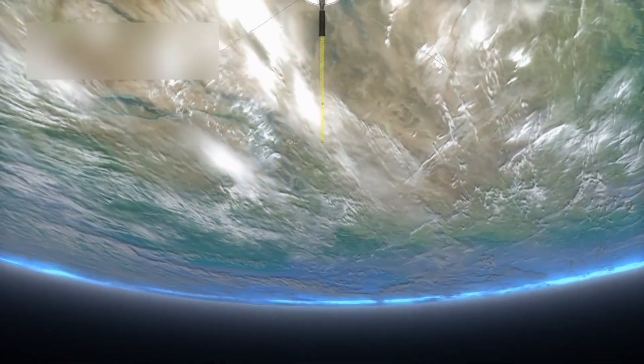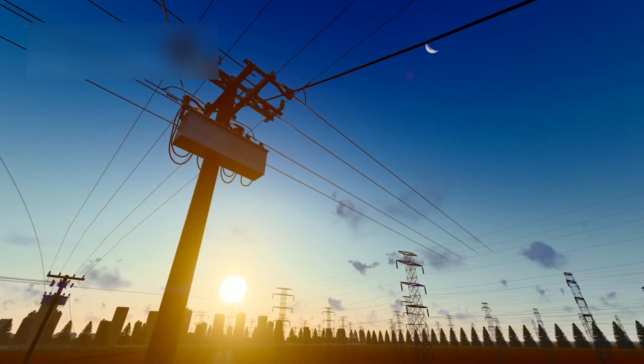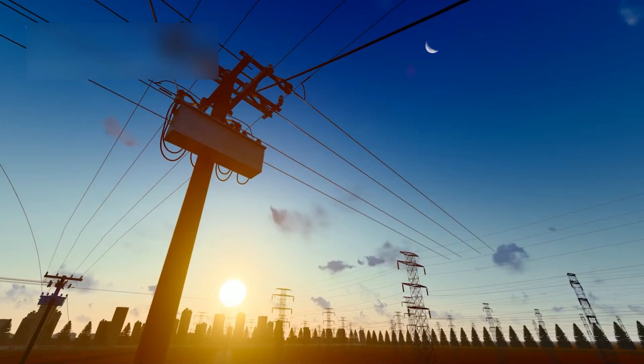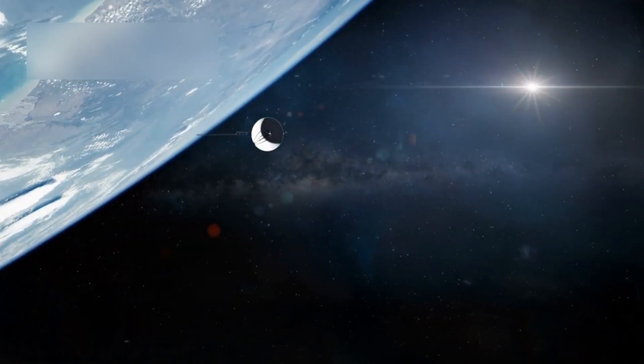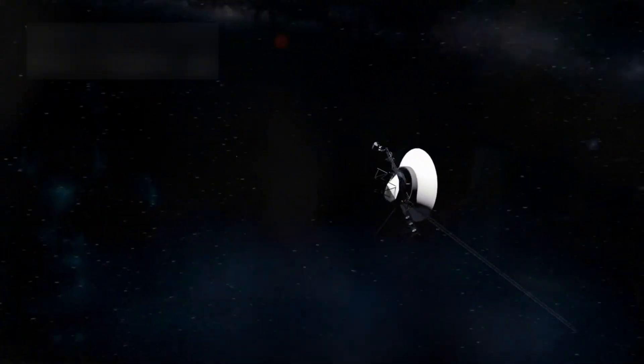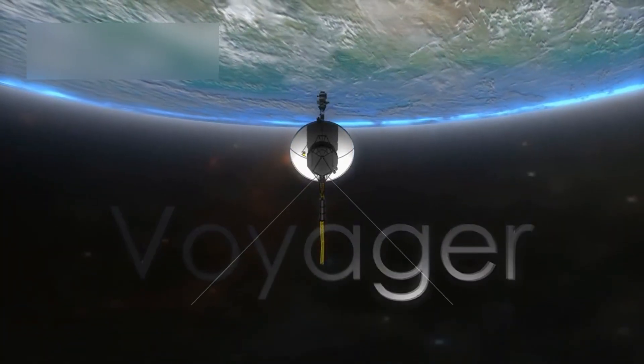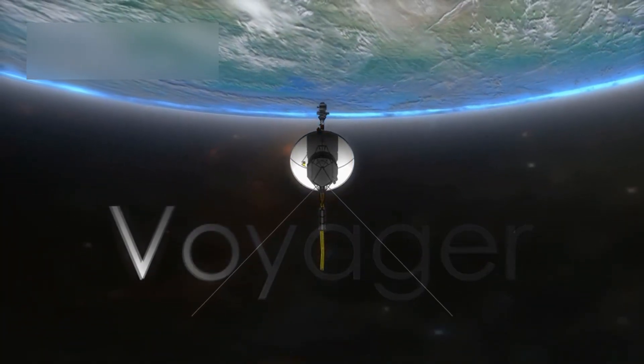The spacecraft continues to face serious challenges. Communication with Earth takes about 19 hours one way, and its power supply is dwindling. To save energy, NASA has had to shut down non-essential systems, leaving only the most critical instruments running. Still, Voyager 1 keeps transmitting valuable data, proving how well it was built.